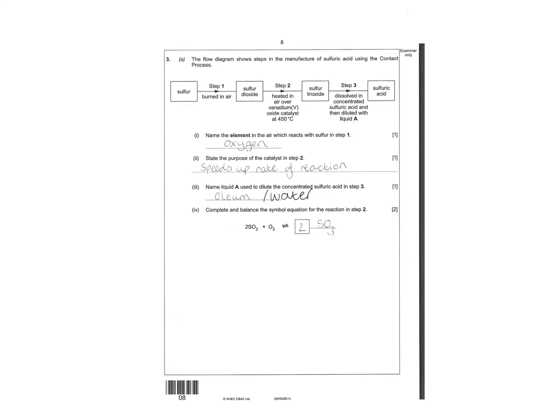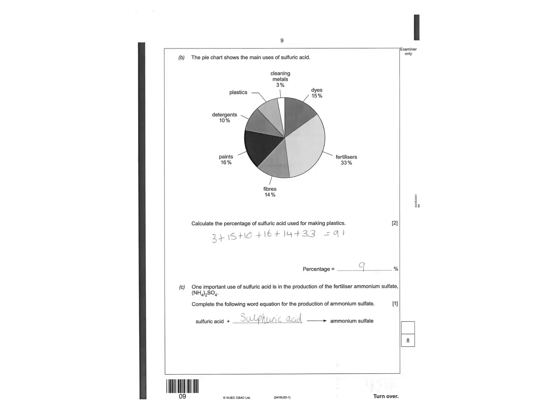Complete the balanced symbol equation for the reaction. You're making sulfur trioxide so there's two of them. Calculate the percentage of sulfuric acid used in making plastics. Add them all up, 91 take away 109. This then is going to be sulfuric acid plus ammonia makes ammonia sulfate.